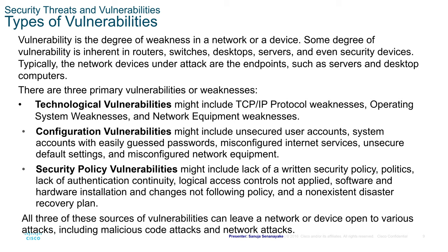Types of vulnerabilities. Vulnerability is the degree of weakness in a network or device — this is a very important definition to remember for your CCNA and CCNP exams. Some degree of vulnerability is inherent in routers, desktop servers, and even security devices. Typically, the network devices under attack are endpoints such as servers and desktop computers, but a threat actor could attack any device in between. There are three primary vulnerabilities: technological, configuration, and security policy.